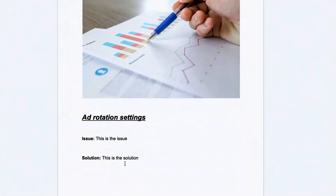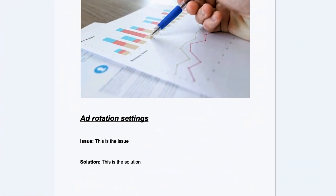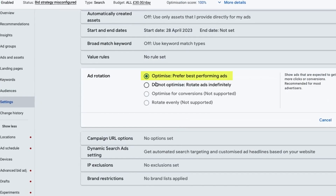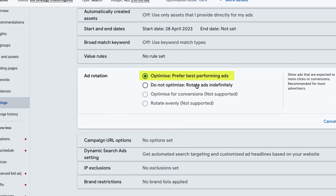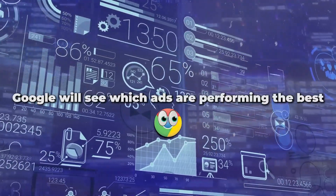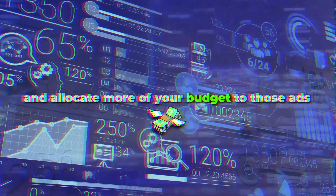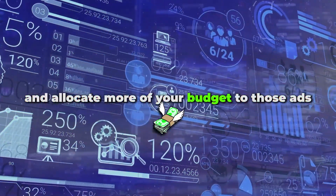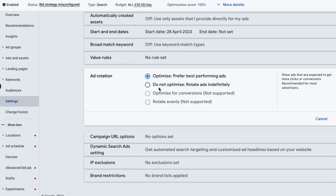Next, check your ad rotation settings — this is part of Google's AI. Select 'optimize for the best performing ads.' Google will identify which ads are performing best and allocate more of your budget to those ads. If you have multiple ads within an ad group and want to split test them, this is the best option, as Google is really good at pushing your budget to the best performing ads.